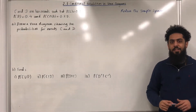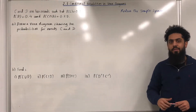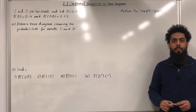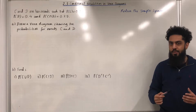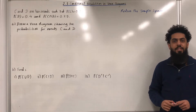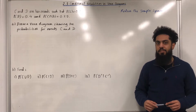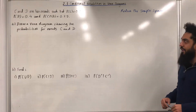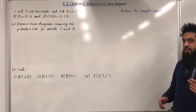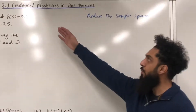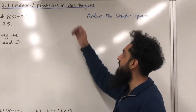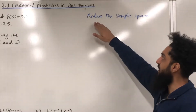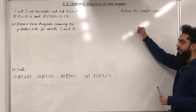Welcome back. In this video I'll be looking at 2.3 conditional probabilities in Venn diagrams. 2.3 represents chapter 2, section 3 of the Pearson A-level maths applied maths year 2 textbook. The method we're going to use for conditional probabilities in Venn diagrams is the reduce the sample space method.